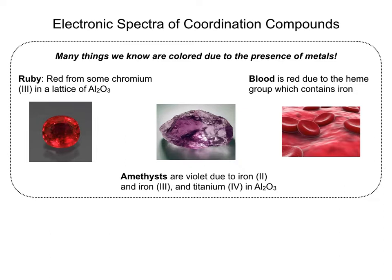Hopefully by now you know that a lot of the colored material we see in everyday life gets its color from electronic transitions, and often it comes from electronic transitions involving D electrons. For example, the red color in ruby comes from the presence of chromium-3 ions within the lattice of an aluminum oxide matrix.